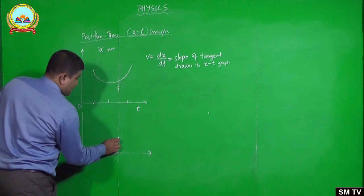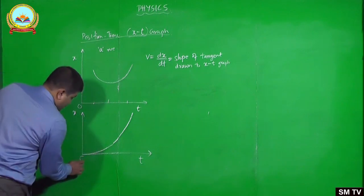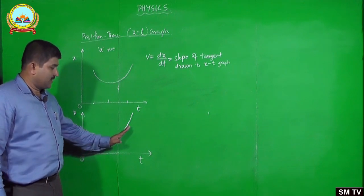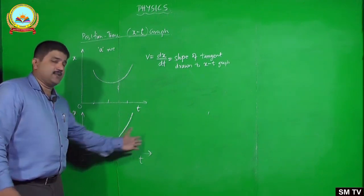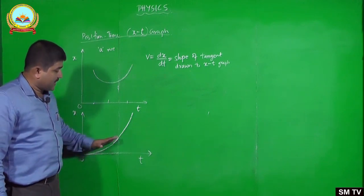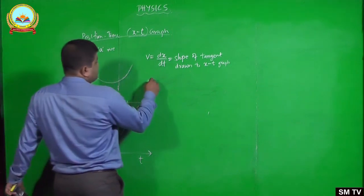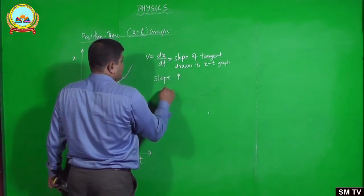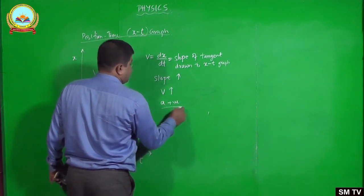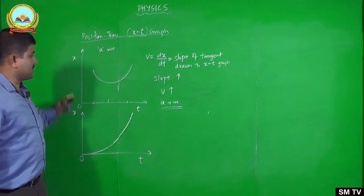So this is the XT graph for a particle with positive acceleration. We can also draw it another way — like this — which also represents the XT graph with positive acceleration. Here also, the slope of the tangent increases as time increases, meaning velocity is increasing, and velocity increasing means acceleration is regarded as positive. This graph or that graph represents positive acceleration.